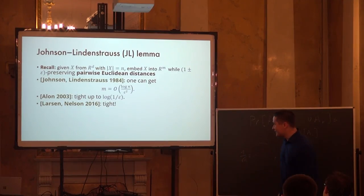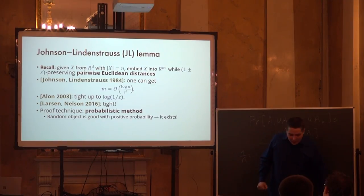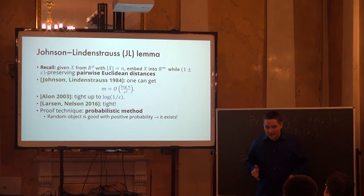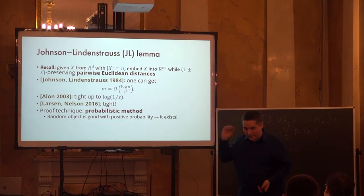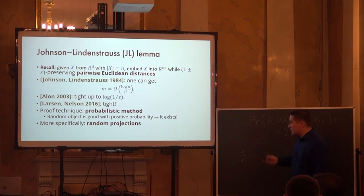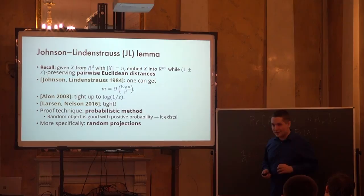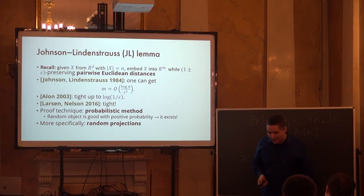JL is not actually so useful by itself in practice because ε² in the target dimension is usually too large. But the idea of random projections is extremely useful. If anything, you should understand the proof of JL to appreciate the notion of a random projection. Let me explain the construction. We'll need normal or Gaussian distribution — the bell curve — and two properties of it.